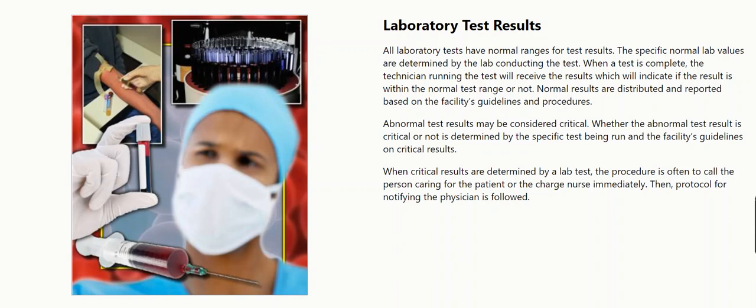Normal results are distributed and reported based on the facility's guidelines and procedures. Abnormal test results may be considered critical. Whether the abnormal test result is critical or not is determined by the specific test being run and the facility's guidelines on critical results.